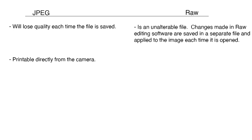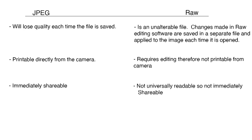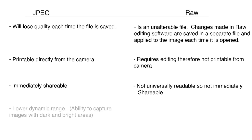JPEGs are printable directly from your camera, whereas RAW files require special editing software and therefore are not printable from your camera. JPEGs are immediately shareable, whereas RAW files are not universally readable, so they're not necessarily shareable right away. JPEGs also have a lower dynamic range — that's the ability to capture bright and dark areas — whereas RAW files have a much higher dynamic range.